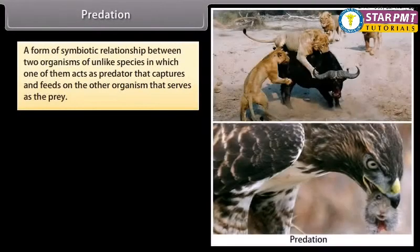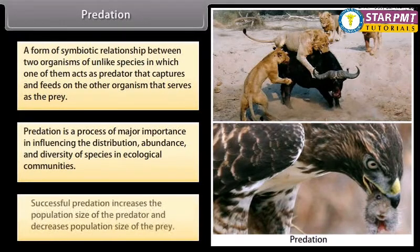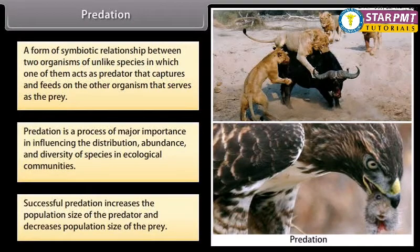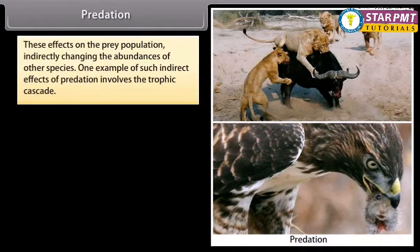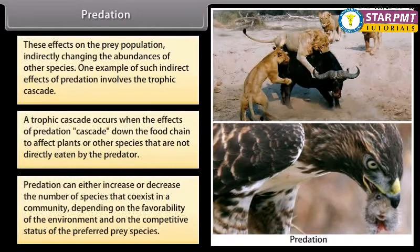Predation is a form of symbiotic relationship between two organisms of unlike species in which one acts as a predator that captures and feeds on the other, which serves as the prey. Predation is a process of major importance in influencing the distribution, abundance, and diversity of species in ecological communities. Successful predation increases the population size of the predator and decreases that of the prey. These effects indirectly change the abundances of other species. One example of such indirect effects involves the trophic cascade, which occurs when the effects of predation cascade down the food chain to affect plants or other species not directly eaten by the predator. Predation can either increase or decrease the number of species coexisting in a community.